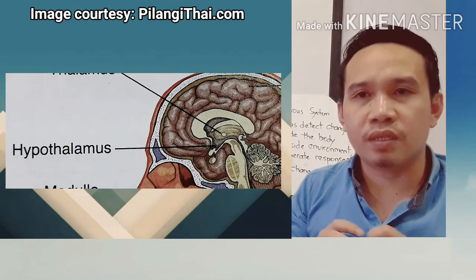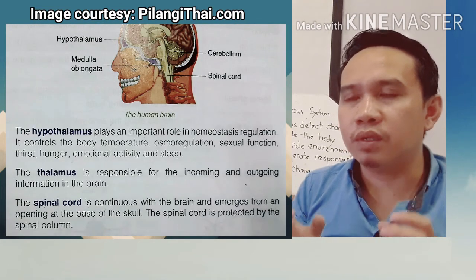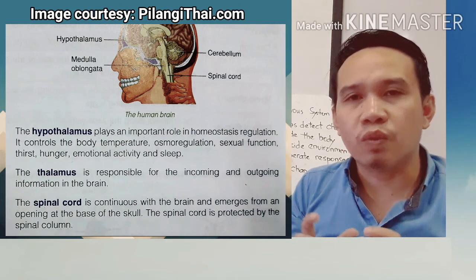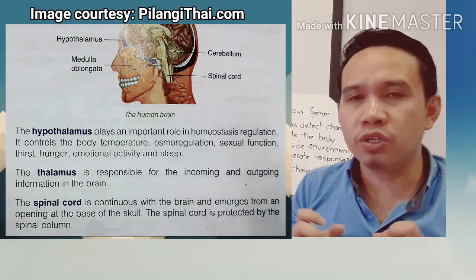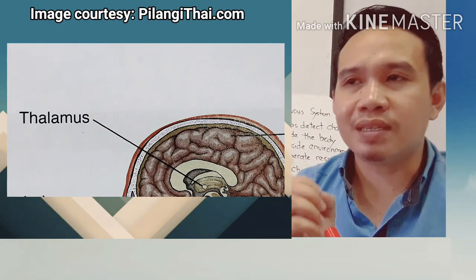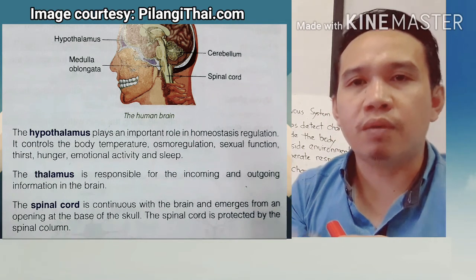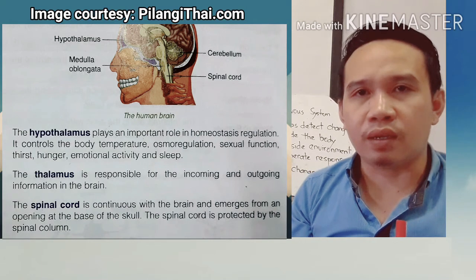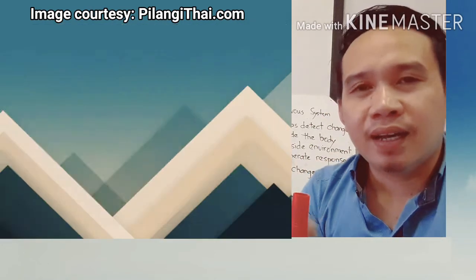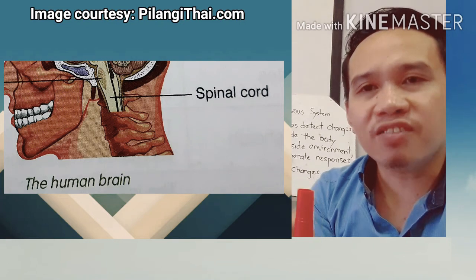The hypothalamus plays an important role in homeostasis regulation. It controls body temperature, osmoregulation, sexual function, thirst, hunger, emotional activity, and sleep. The thalamus is responsible for processing incoming and outgoing information in our brain, allowing us to understand and comprehend messages coming from our brain.